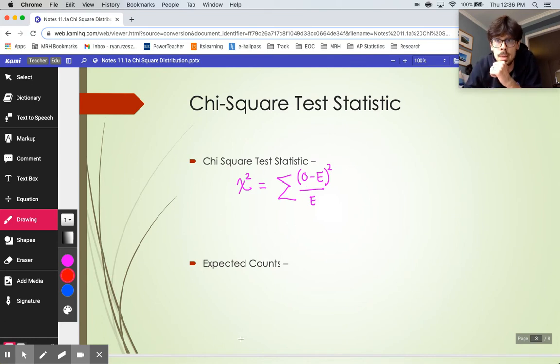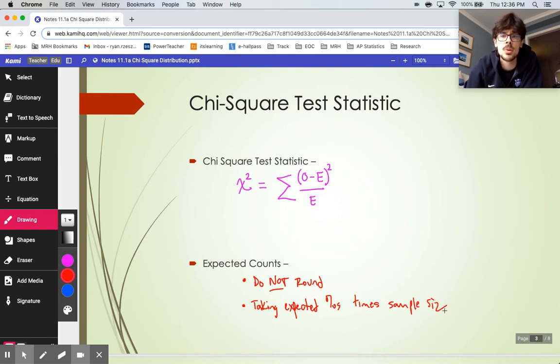Couple comments on expected counts here. First of all, as we saw in the M&M problem, do not round your expected counts. Yes, it's not possible to have 6.5 red M&Ms like we said in the last video, but that's still what's expected to happen. You cannot just turn those into whole numbers. When you do expected counts, you find them by taking the expected percents times your sample size.